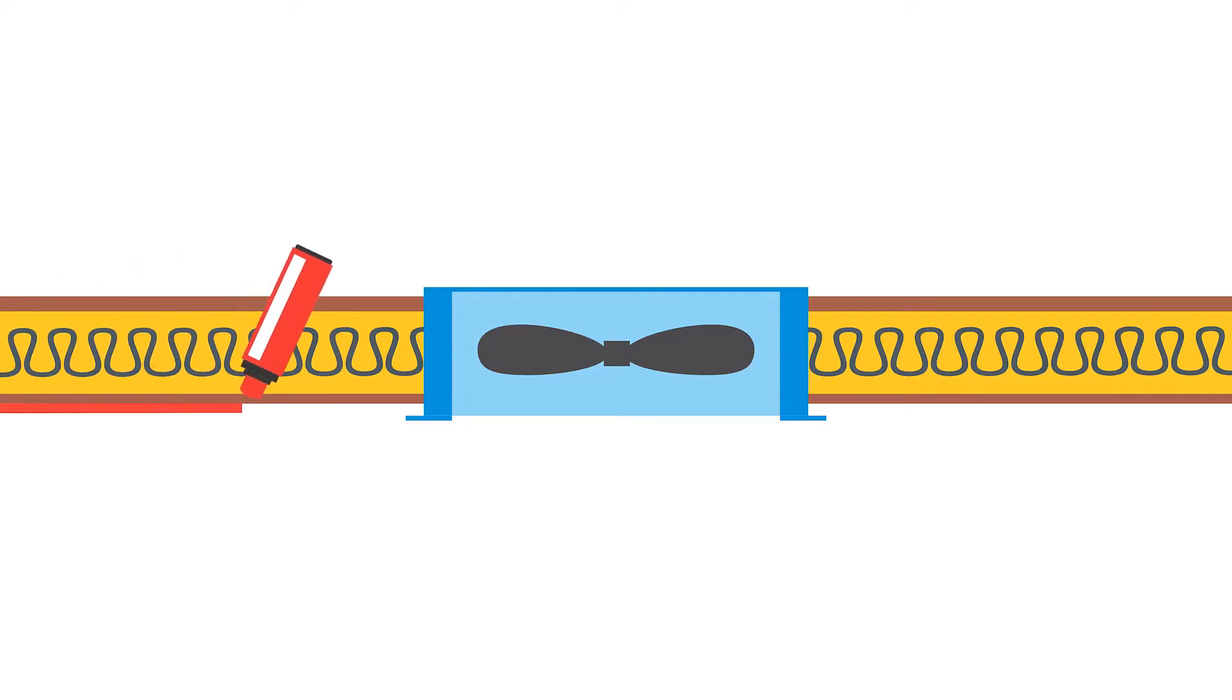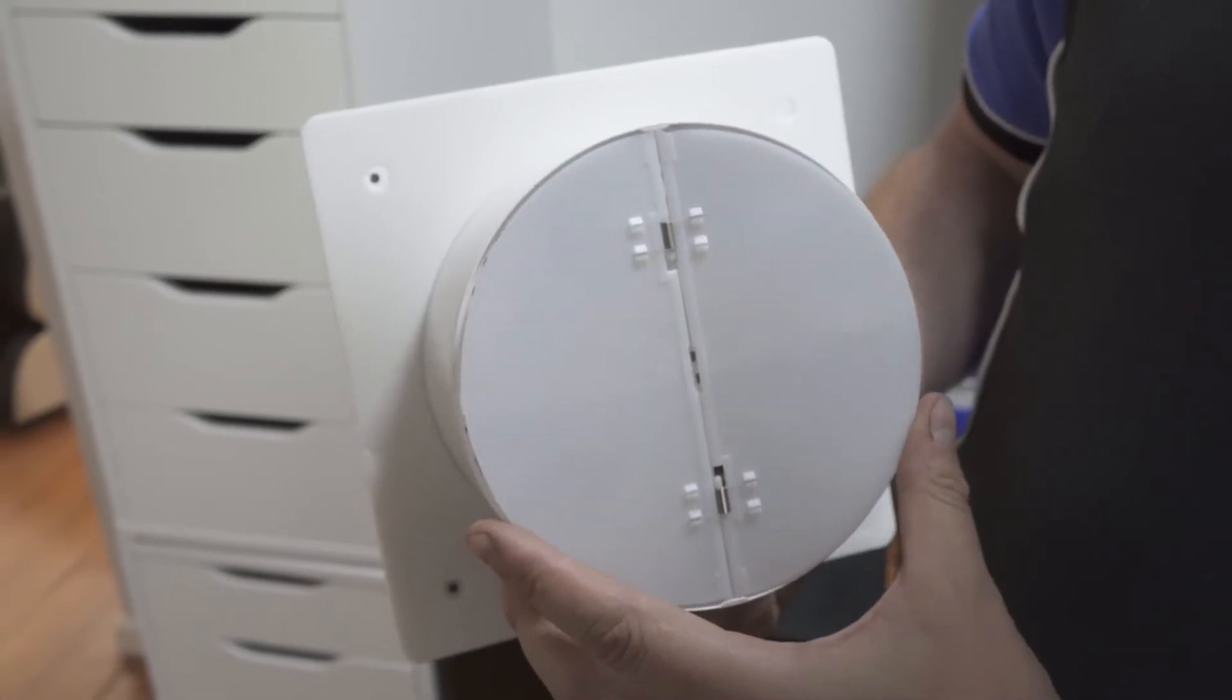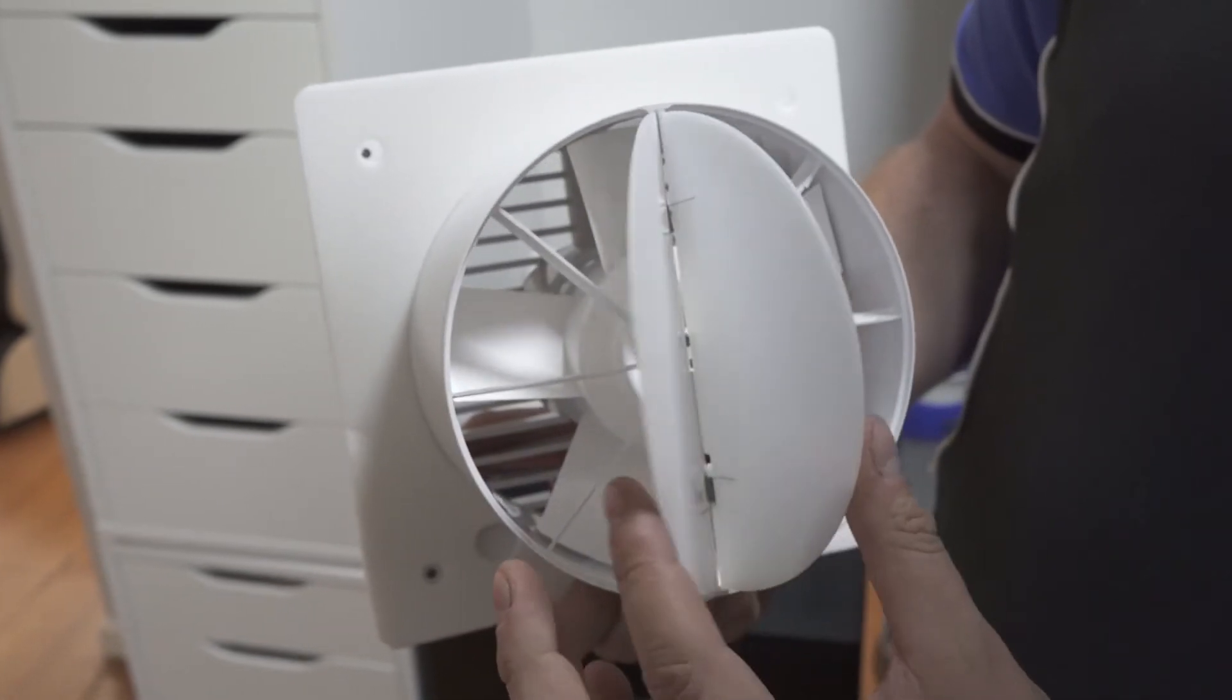This one should be obvious too. Bathroom fans should have a draft stopper on them to seal them shut when they're not in use. In fact it's required by code now. When the fan isn't running it shouldn't be leaking air out of your house.